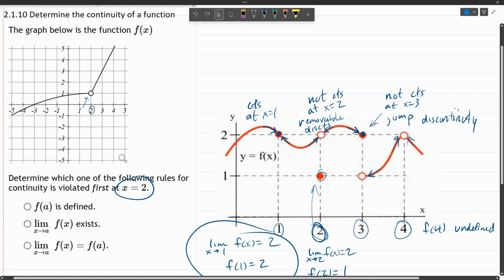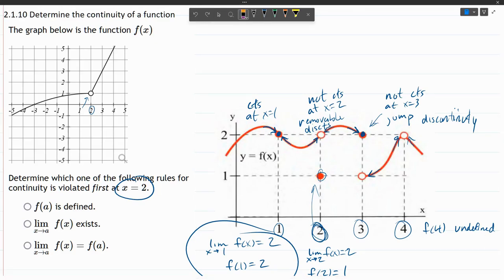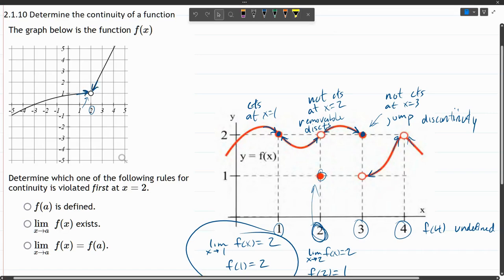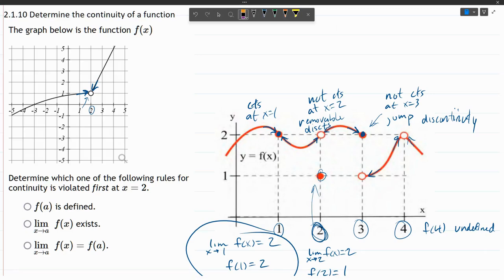All right. Now that we reviewed the problem in the textbook, let's look at this problem. Which of the following rules for continuity is violated first? So we're thinking about that point right there. Does the limit exist in this graph? If we approach on the left and the right, let me get that little arrow out of there. If we approach on the left and the right, they're both approaching a y value of one. So I can write that this limit does exist.